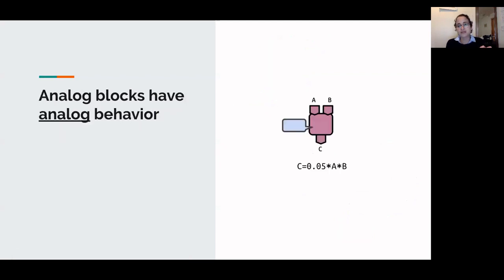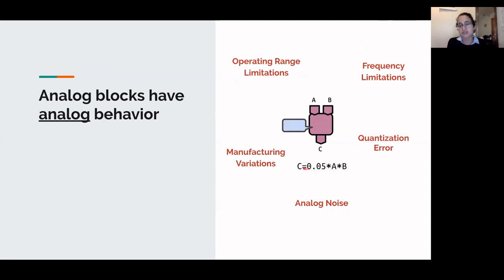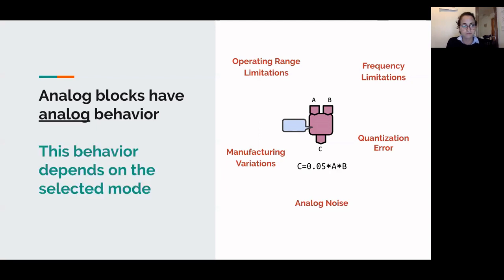In addition to these behaviors that make implementing computation more complicated, these analog blocks have analog behaviors we did not previously anticipate. Real physical analog devices have analog noise, quantization resulting from configuring digital values within the blocks, and because we leverage the analog behavior of transistors, manufacturing or process variations that affect transistor behavior actually change the function implemented by each block. So we must consider analog noise, quantization error, more complicated frequency constraints, manufacturing variations, and all of these behaviors depend on the selected mode.